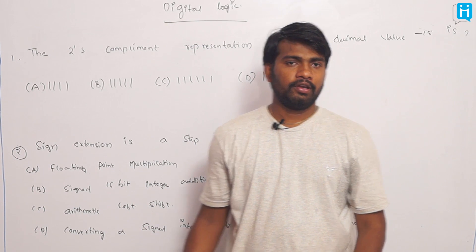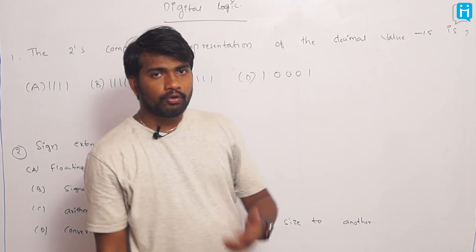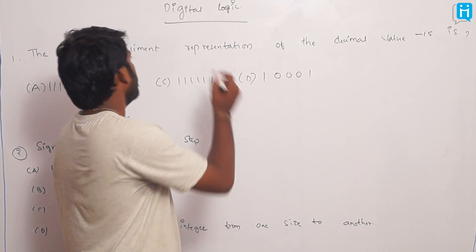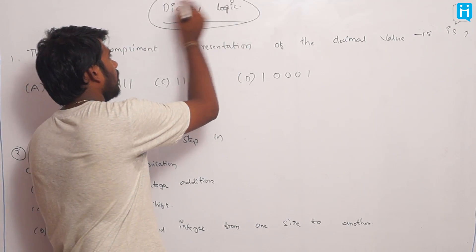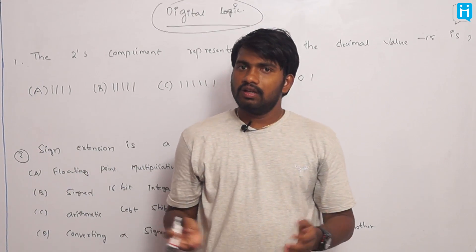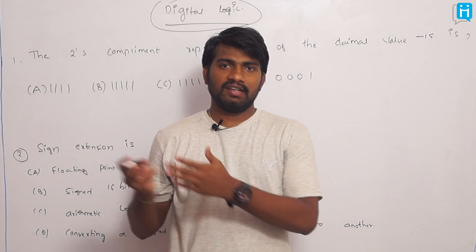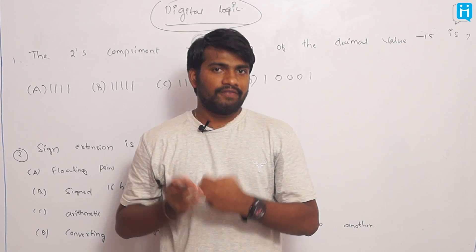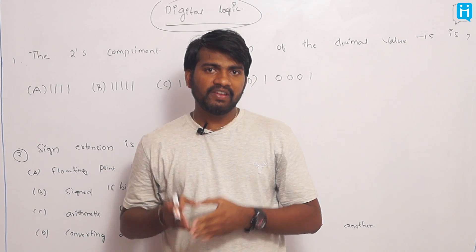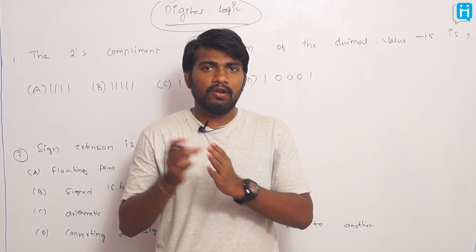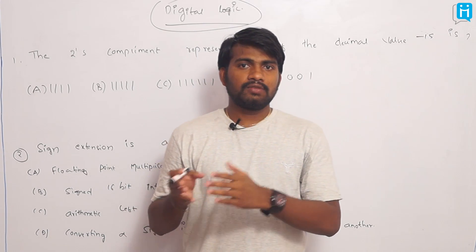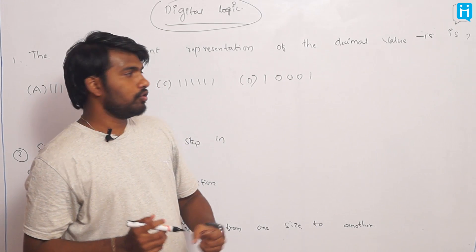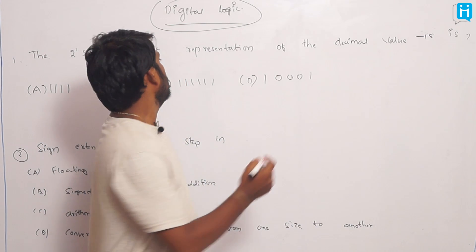Hi everyone, I am Masaf Rakesh. I am here to explain a few important questions that occurred in GATE from the digital logic concept. When you go into digital logic, the digital world is all around us — the only thing digital indicates, at its core, is 1 and 0, which is understood only by a computer machine. Now I'm explaining a few important questions which occurred in GATE earlier.